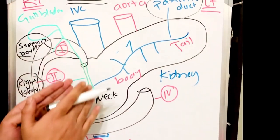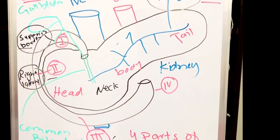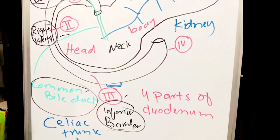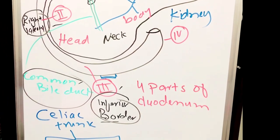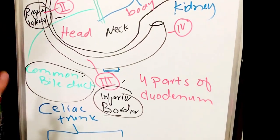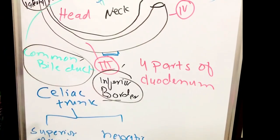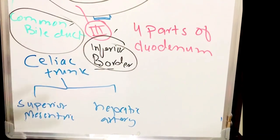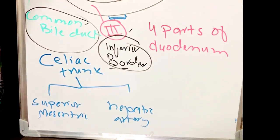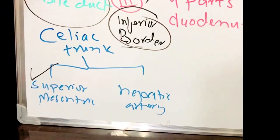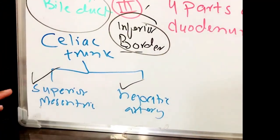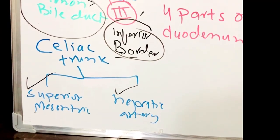The blood supply to the pancreas comes from the celiac trunk. Two branches of the celiac trunk supply the pancreas: one is the superior mesenteric branch and the second is the hepatic artery. Thanks for watching this video.